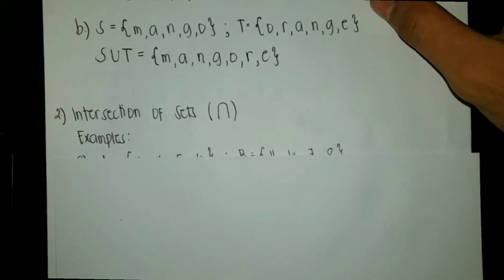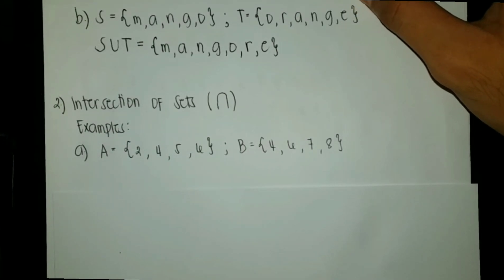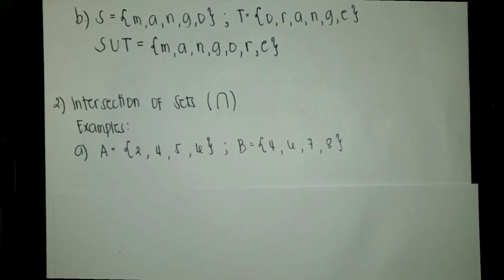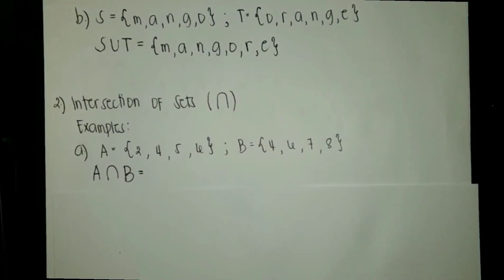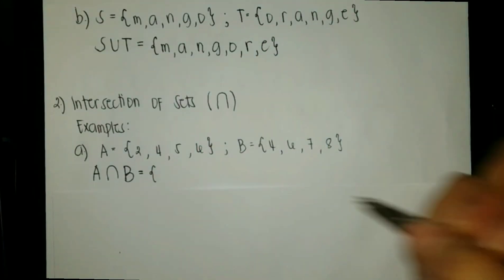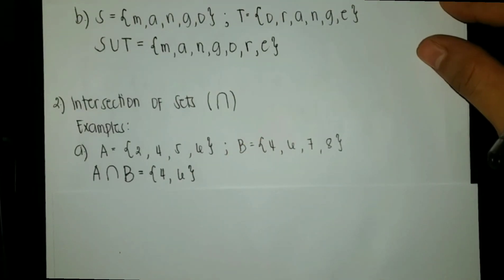For example, we have sets A and B with the elements 2, 4, 5, 6 and 4, 6, 7, 8. Let us get A intersection B. Intersection of sets contains the elements that are common on the given sets. So what are the common elements of both sets A and B? We have the set with the elements 4 and 6. That is A intersection B.